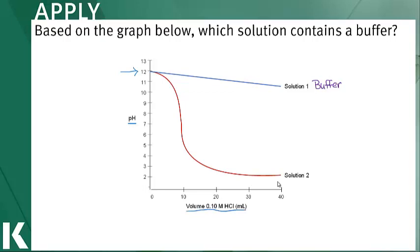Solution two, however, has this very rapid change in pH around 10 milliliters of hydrochloric acid being added. Because it has this rapid change, this one is absolutely not a buffering system.